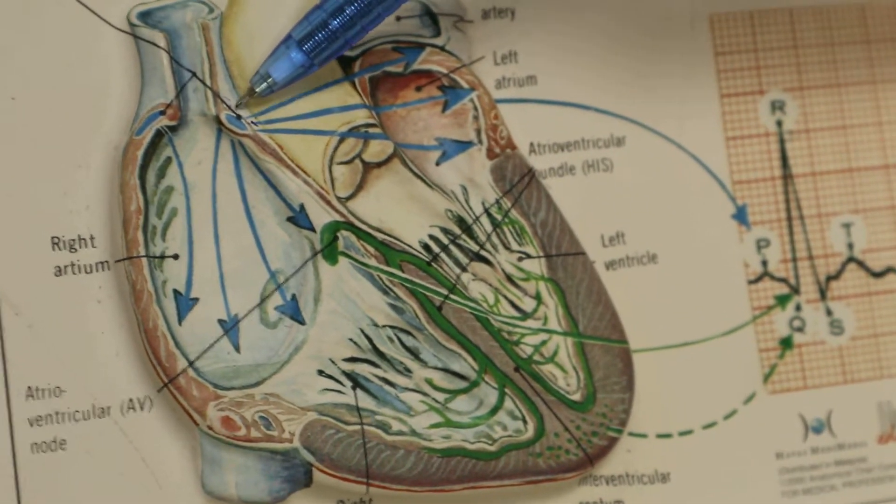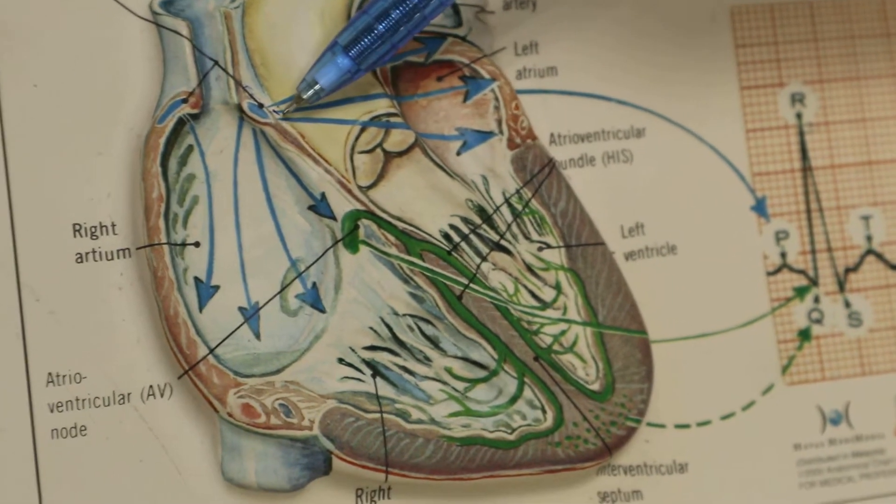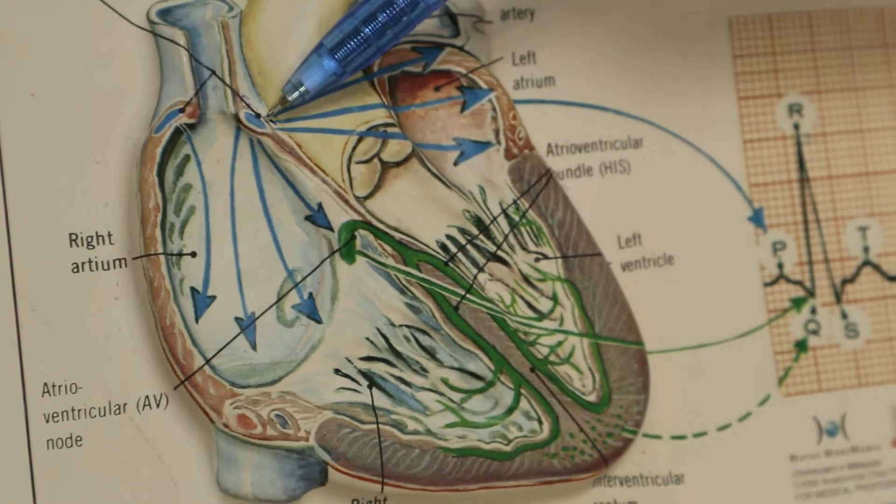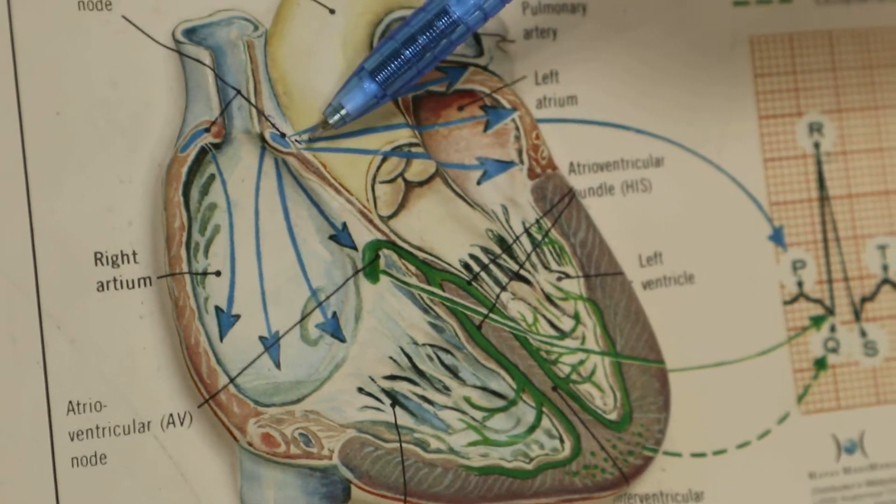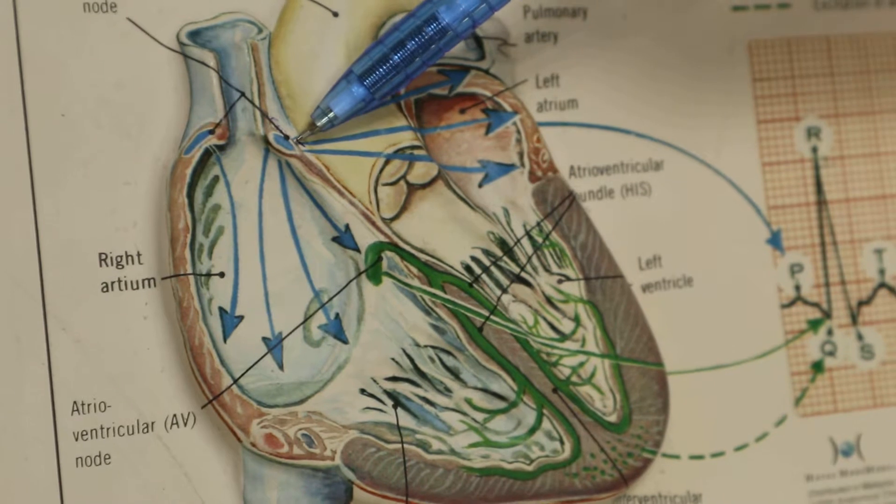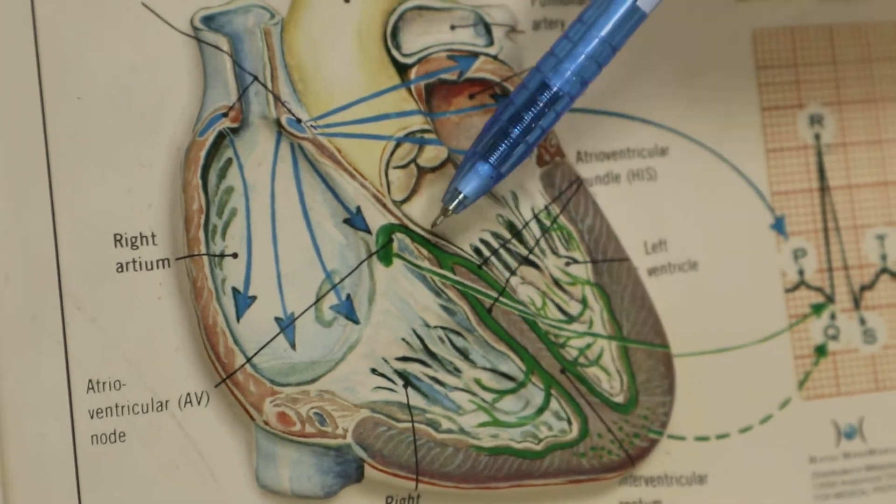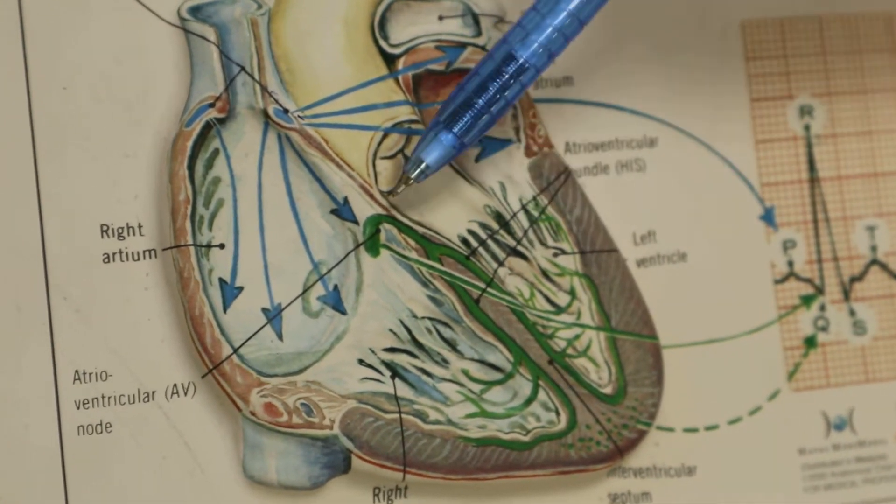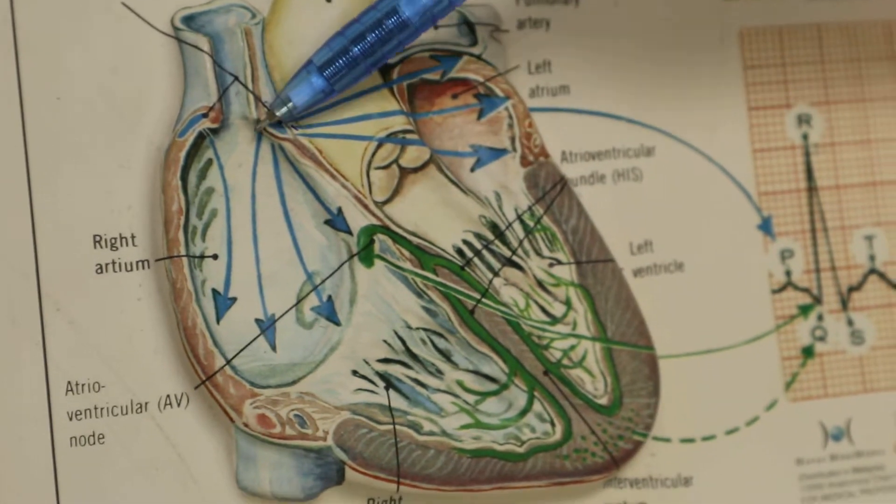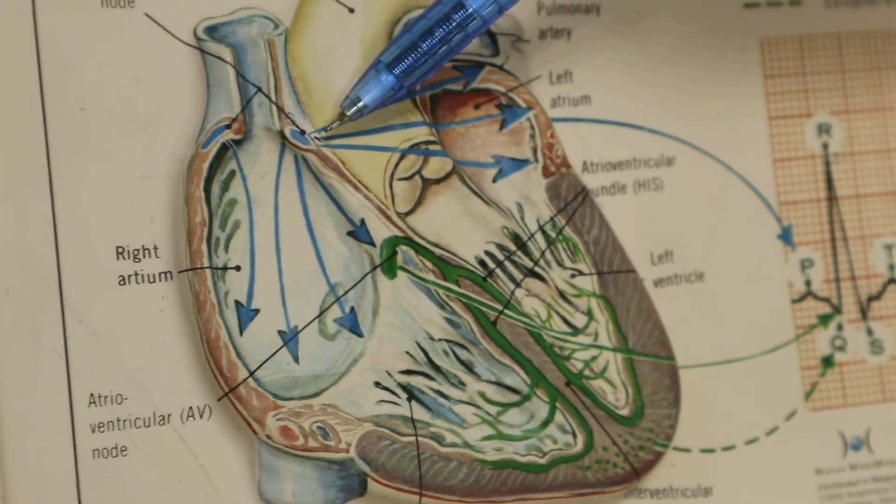The important thing to note is that the SA node is known as the pacemaker of the heart because it fires at a rate of 72 beats per minute. This is far faster than the firing rates of these other branches. Therefore, the heart contracts as a whole unit.